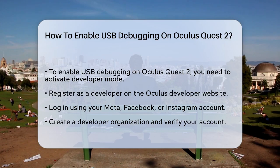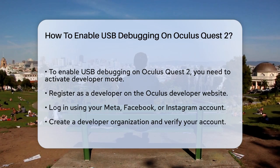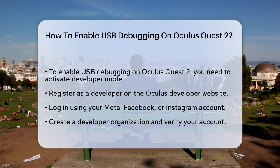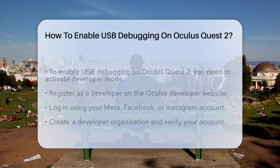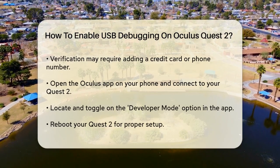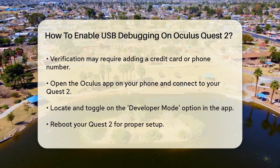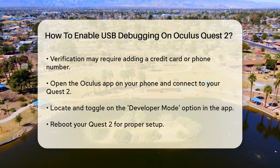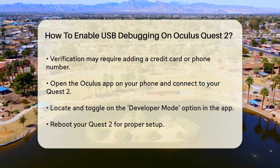First, you need to activate the developer mode on your Oculus Quest 2. To do this, start by registering as a developer on the Oculus Developer website. Go to the Oculus Developer page, log in with your Meta, Facebook, or Instagram account, and create a developer organization. You'll need to verify your account, which might require adding a credit card or phone number.